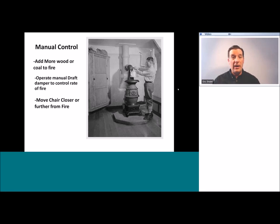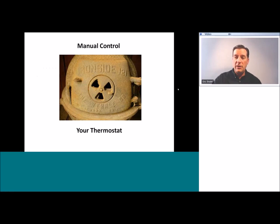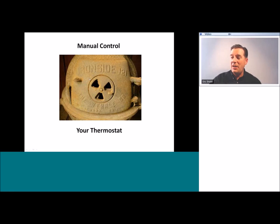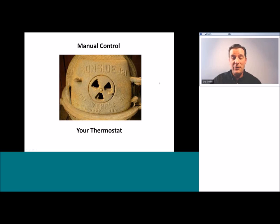One of the reasons we have electronic controls is to make things more accurate so we don't have that wide range of temperature fluctuations anymore. Here's an example of that manual control — this was your thermostat back in the days of the potbelly stove. The shape of this draft damper is very similar to the shape of the old round Honeywell T87F thermostat, and I like to think the T87F is round because generations previously, people were used to adjusting a round draft damper to control the rate of the fire.